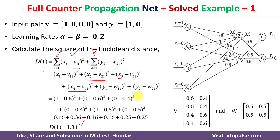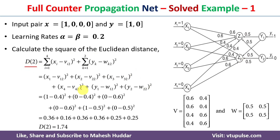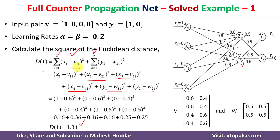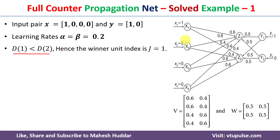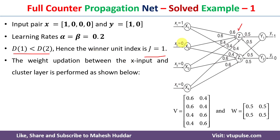Similarly, we need to calculate the Euclidean distance to the second cluster z2, that is d2. The same equation is used; the only difference is we use v_i2 and w_k2 instead of v_i1 and w_k1. After expanding and putting the values, we get d2 equal to 1.74. Since d1 is 1.34 and d2 is 1.74, d1 is minimum, meaning the input pair is assigned to cluster unit 1, that is j equals 1.